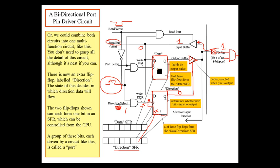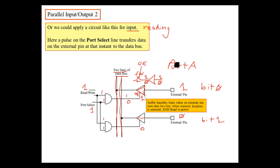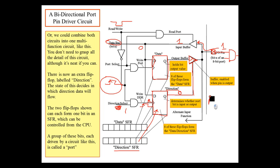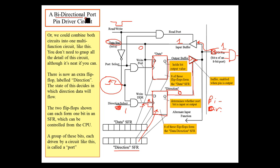As far as the data register goes, it's the same as we talked about before — this is the same circuitry. Really all we've done is combine both the input circuitry and the output circuitry. Now we have what we call a bi-directional port. Bi-directional just means that it works both as an input and output, which means you can read and write.